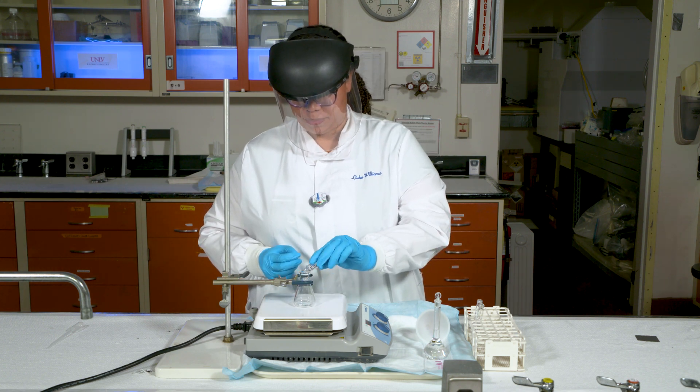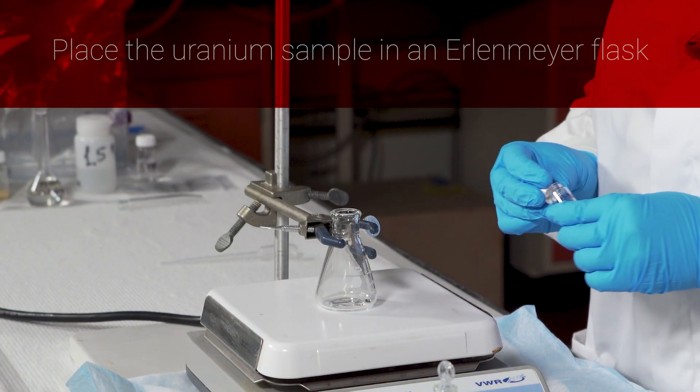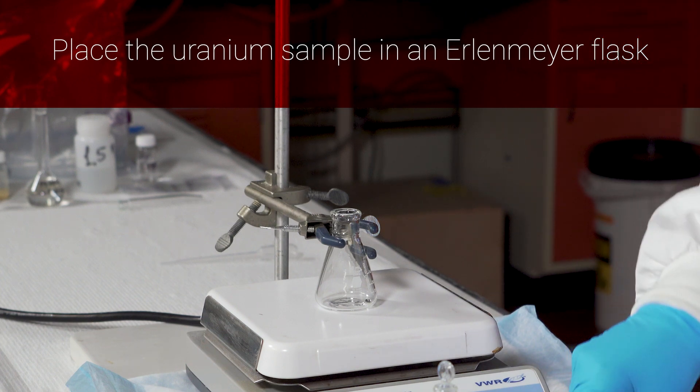To start, we place the uranium sample in an Erlenmeyer flask and add about 30 milliliters of 6.5 molar hydrochloric acid to dissolve.